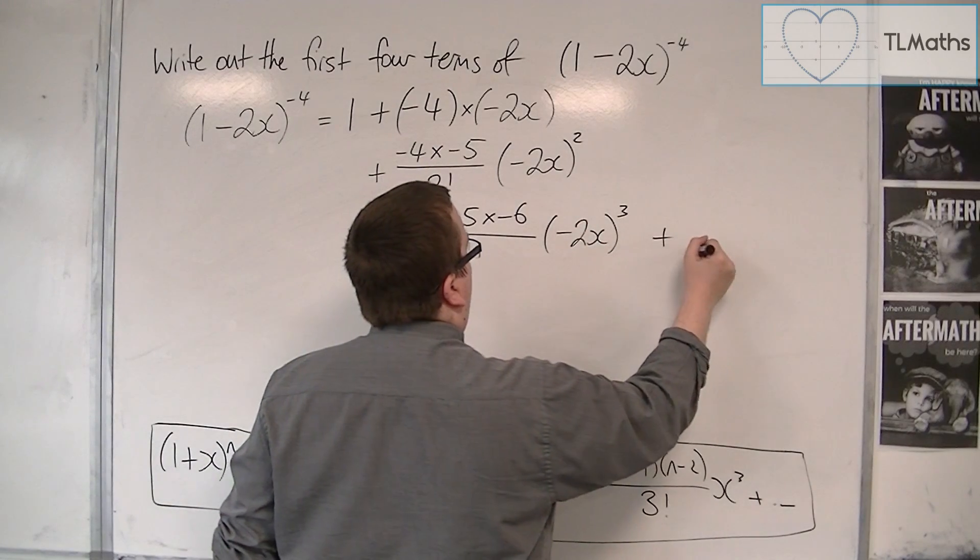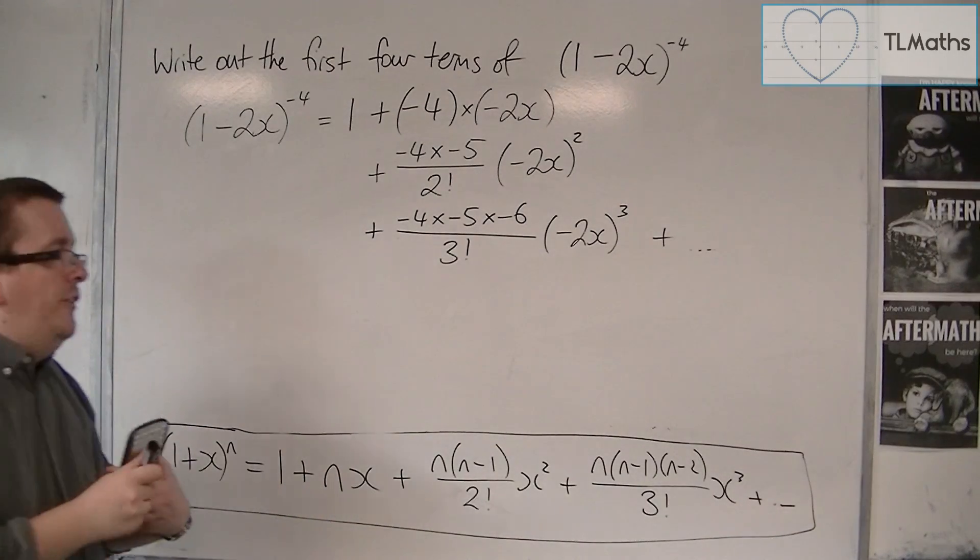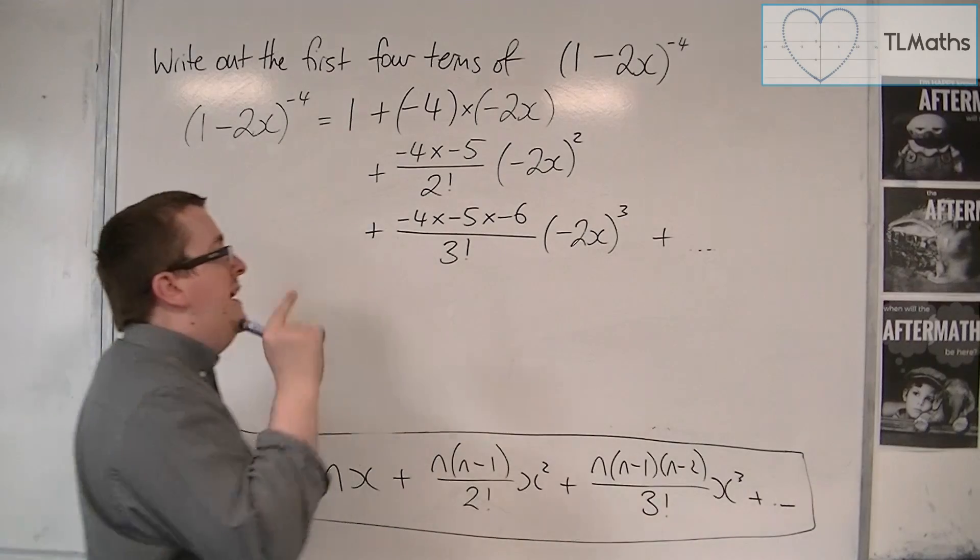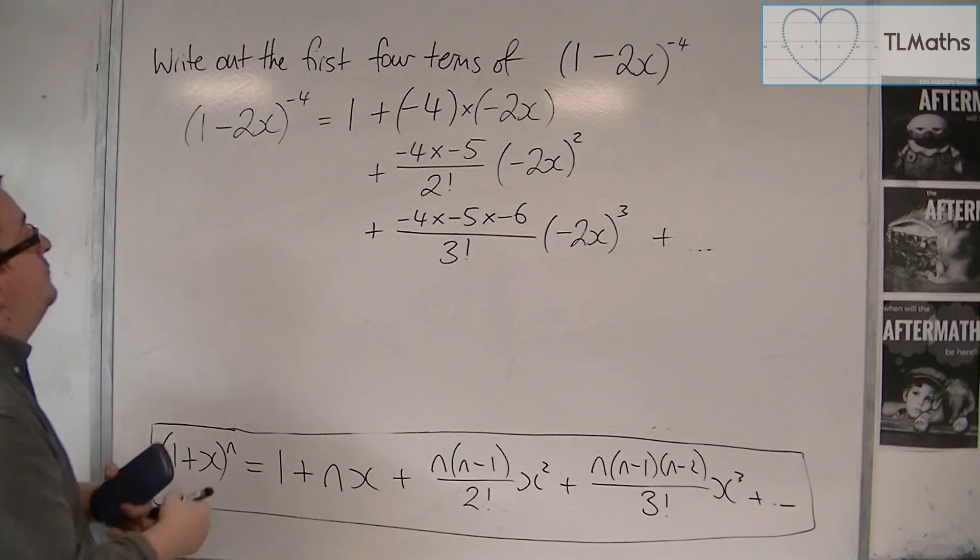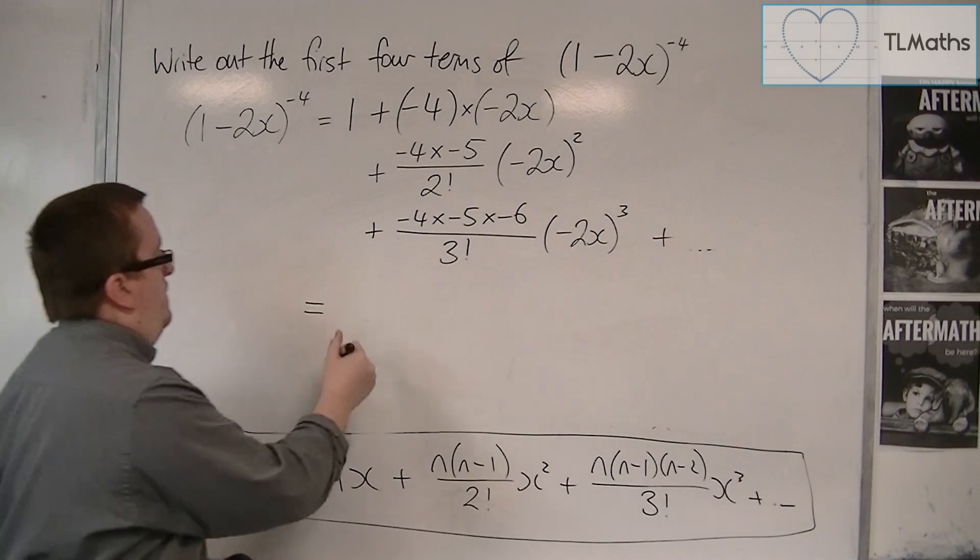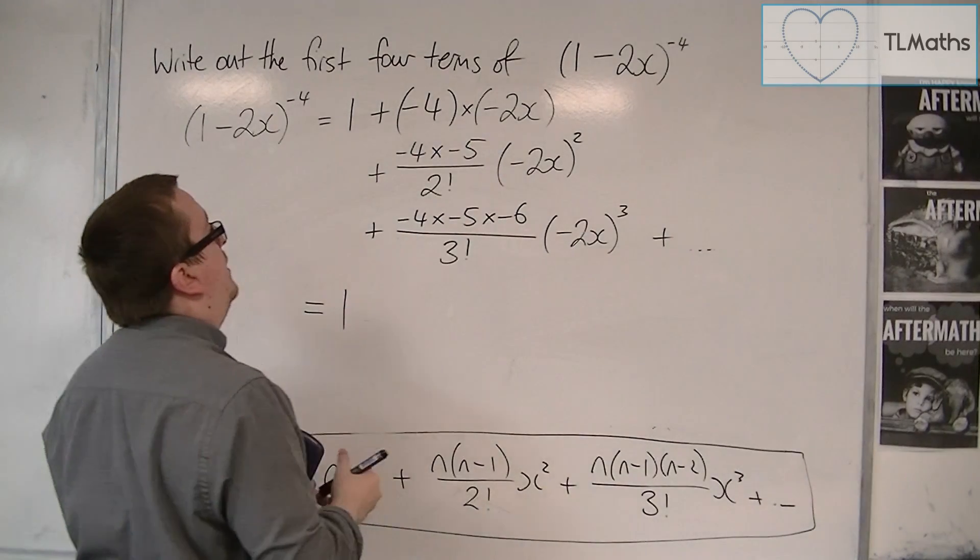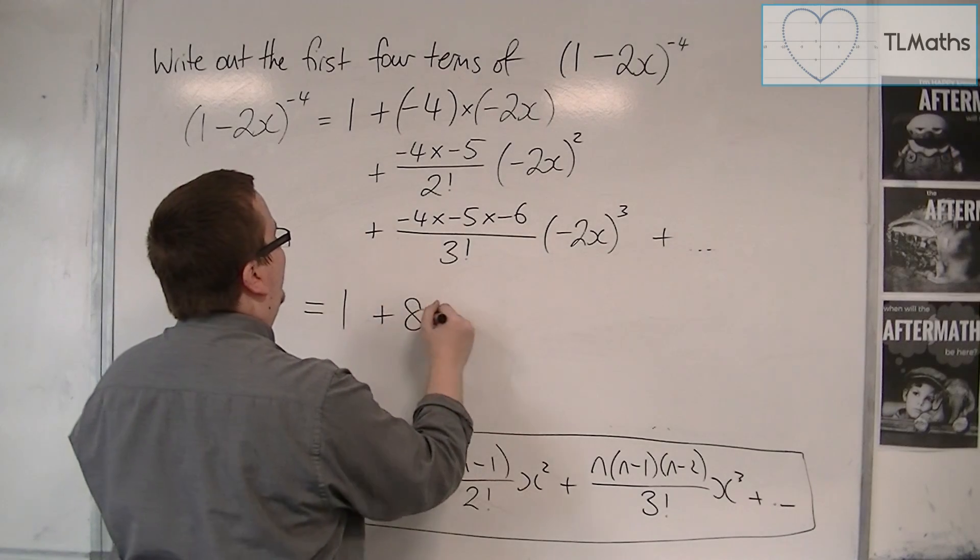Plus other terms. This goes on forever. This is an infinite series. So what do we have? We've got the 1. That's nice and easy to work out. We've got -4 times -2, so that would be plus 8x.